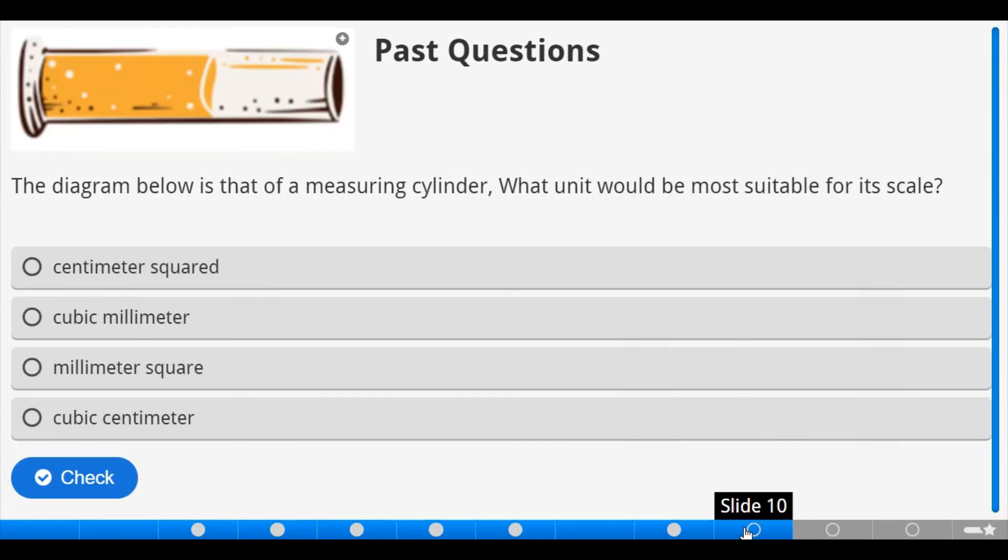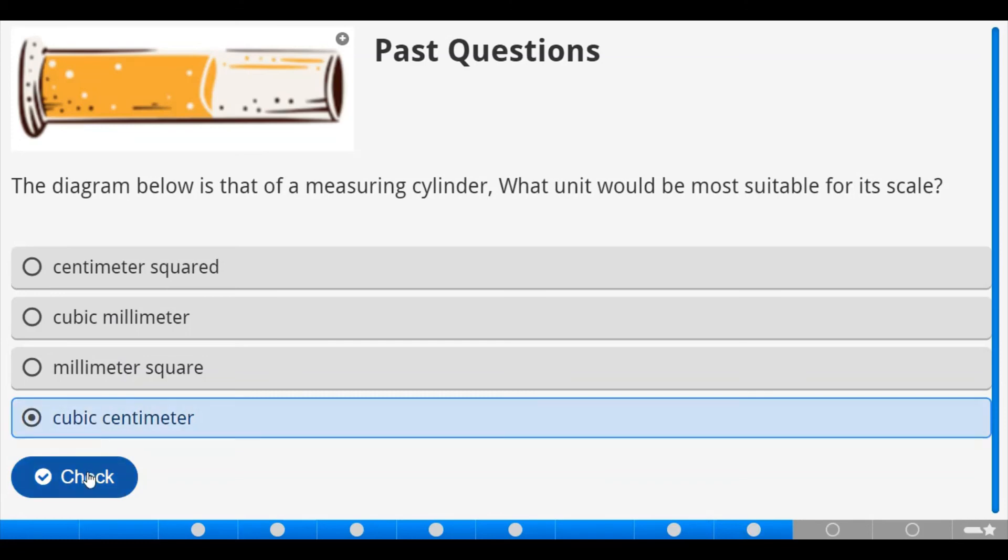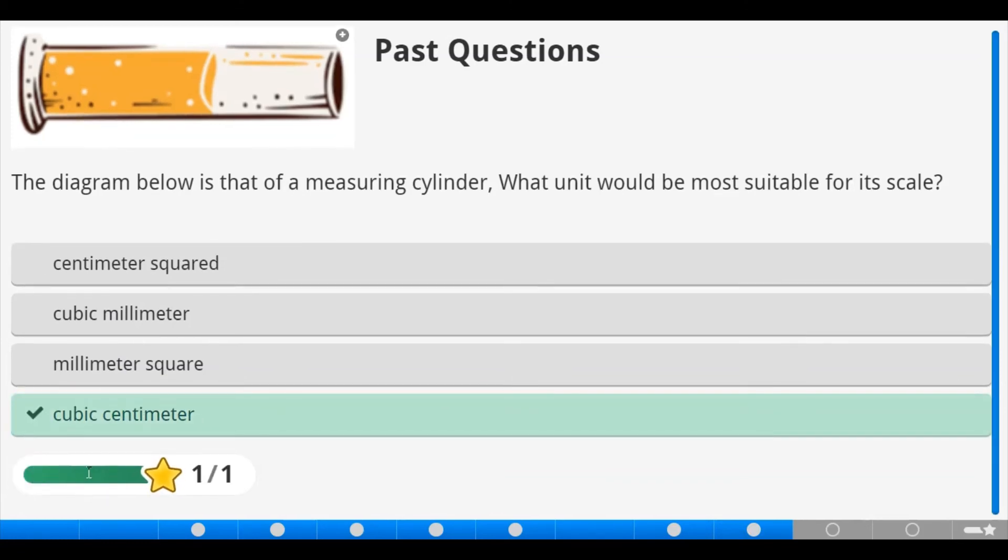Now, the diagram below is that of a measuring cylinder. What unit would be most suitable for its scale? Don't forget that a measuring cylinder has breadth, that is width, and height, and length. So, in terms of the volume, it will now measure the cubic centimeter or centimeter cube. We have it as part of the option. Cubic centimeter. Now, let's check. That's correct.